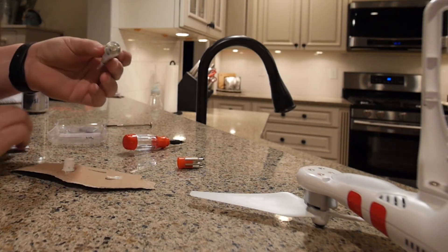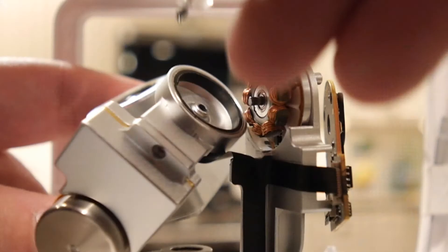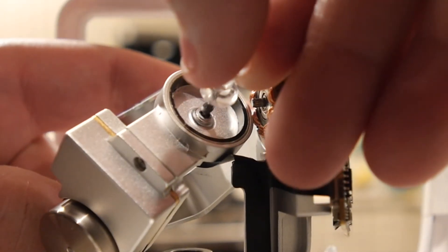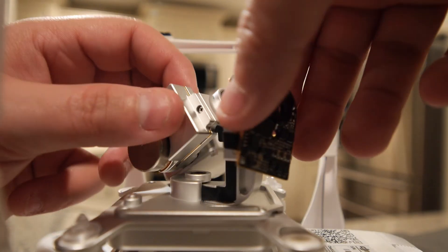For this fix I mixed up some JB weld with a thumbtack. I then used the thumbtack to transfer the weld to the hole. Once it's evenly applied to the hole, I fitted the rod back into the hole and pressed it together.